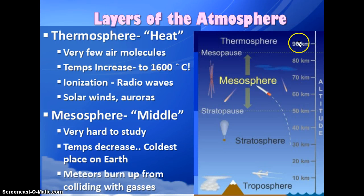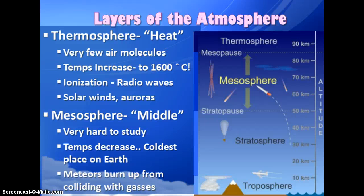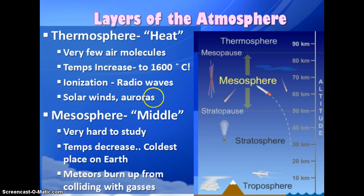Going down from the exosphere, the next layer is the thermosphere. 'Thermo' means heat — temperatures here can reach up to 1,600 degrees Celsius, or 3,000 degrees Fahrenheit. There are very few air molecules, but UV rays from the sun hit those molecules and cause them to ionize — gaining or losing electrons to form charged particles. This allows radio waves to bounce off this layer, and it's also where aurora borealis, the northern lights, occurs.